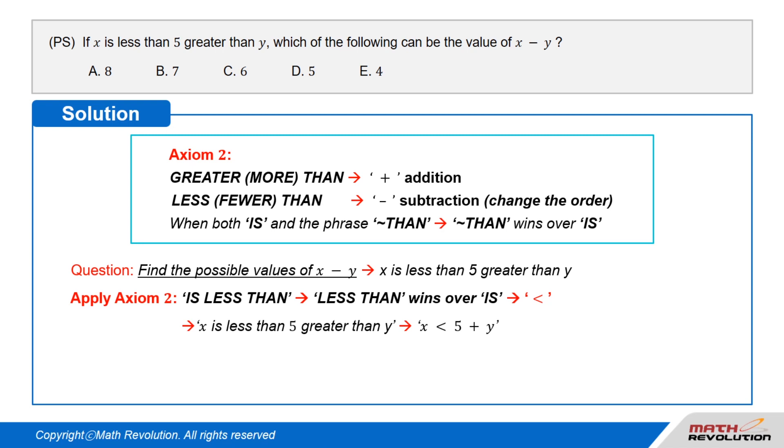Next, we can replace the words '5 greater than y' with '5 plus y'. So, 'x is less than 5 greater than y' can be written as x is less than 5 plus y. This is a precise conversion into an inequality.